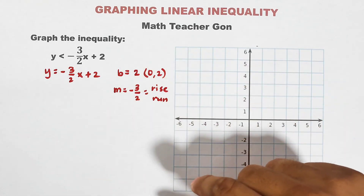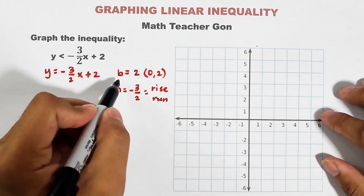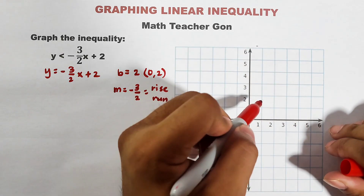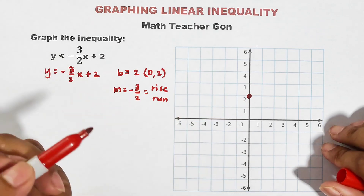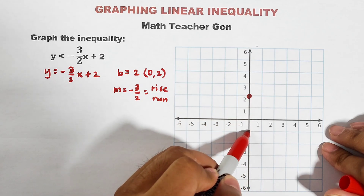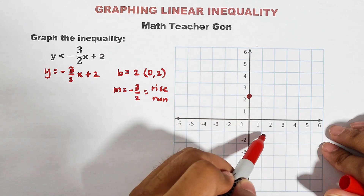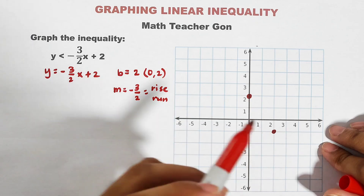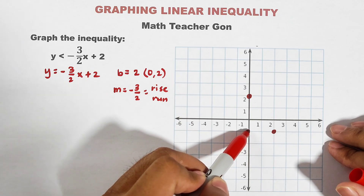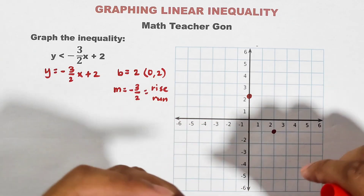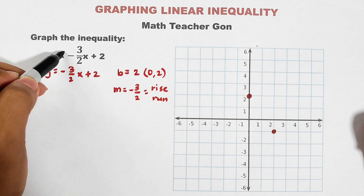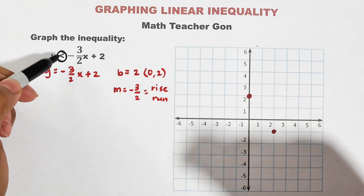Let's plot the first point — the y-intercept — located here. To get the second point, use rise over run: rise is negative 3, so from this point go down 1, 2, and 3. For the run, move 2 units to the right: 1 and 2. This is now the second point. Since the inequality is strictly less than, the line must be a broken line. Let's graph the broken line.